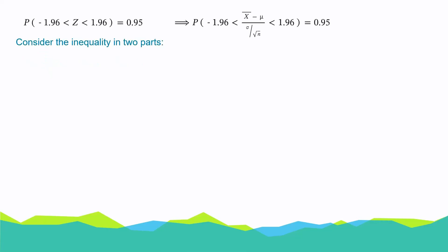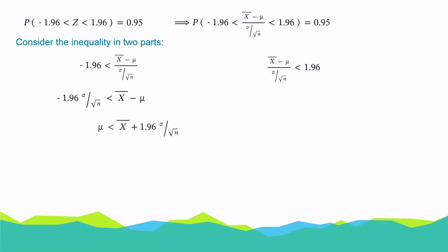Considering the inequality, we can split it into two parts, where we have minus 1.96 being less than (x bar minus mu) over (sigma over root n), and (x bar minus mu) over (sigma over root n) is less than 1.96. For the first part, multiplying both sides by sigma over root n, we have minus 1.96 times sigma over root n is less than x bar minus mu. Rearranging, mu is less than x bar plus 1.96 times sigma over root n.